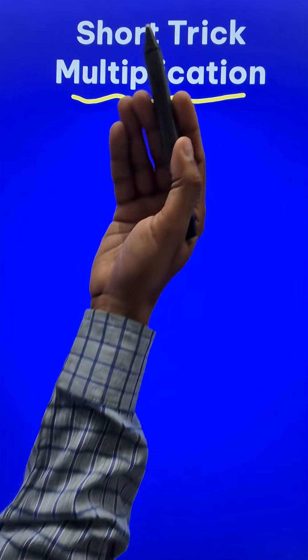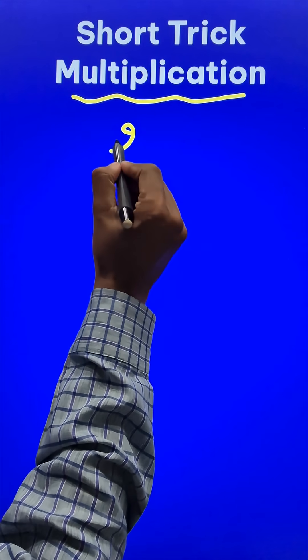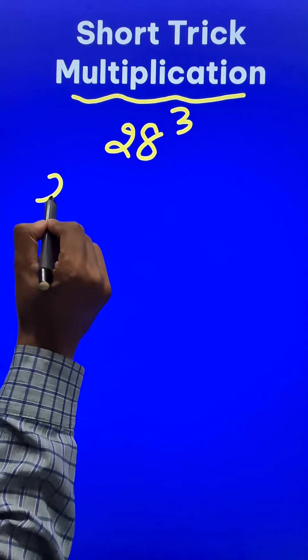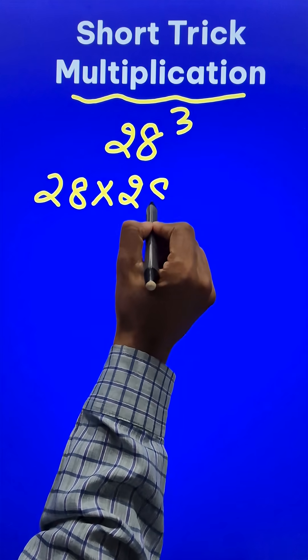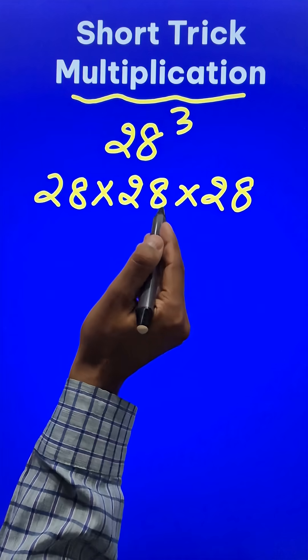Multiplication is wonderful, especially when you know some very smart and short tricks. Suppose you have to do 28 cube, or 28 times 28 times 28. Use of identities in this case is a must.